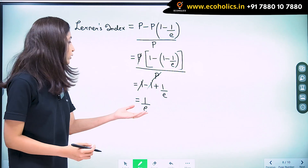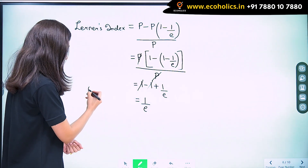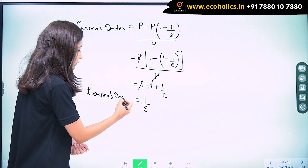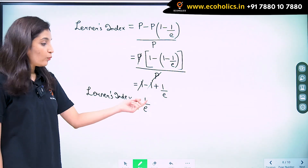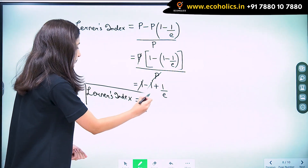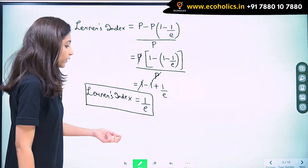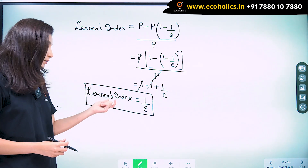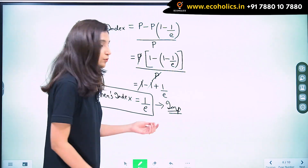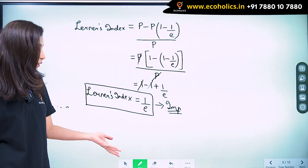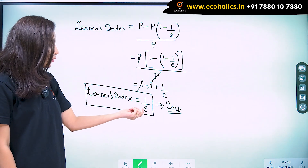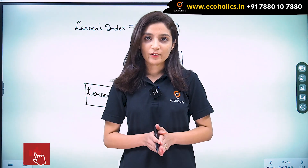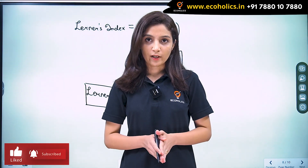So finally, our Lerner's index is equal to 1 upon E. That is, Lerner's index and price elasticity of demand are inversely related. This is the relationship between Lerner's index and price elasticity of demand — one of the most important relationships. What we can conclude is that the higher the price elasticity of demand, the smaller the Lerner's index of monopoly power. That's it for this video. For more such videos, do like and subscribe to our channel. Thank you.